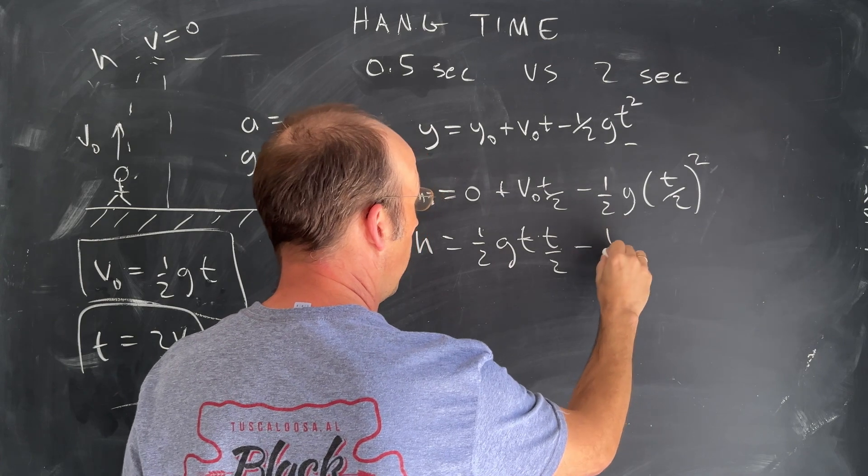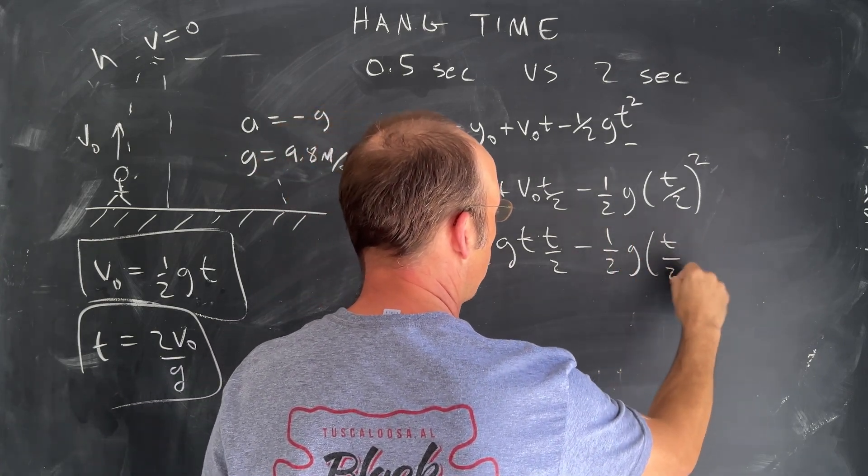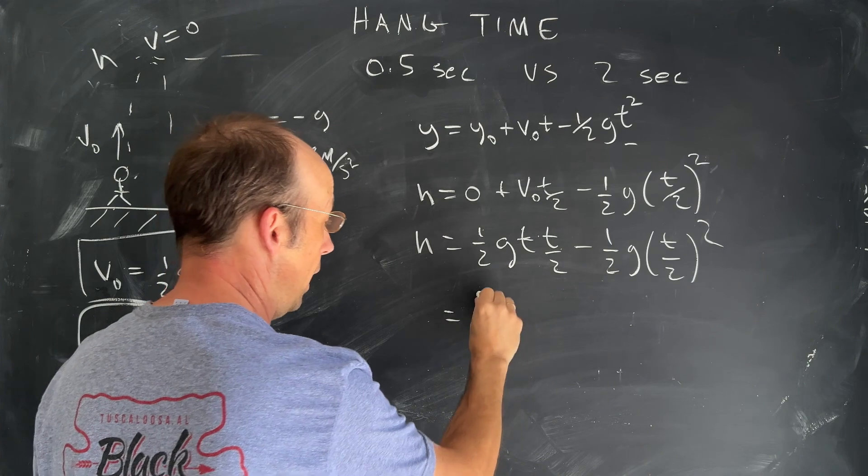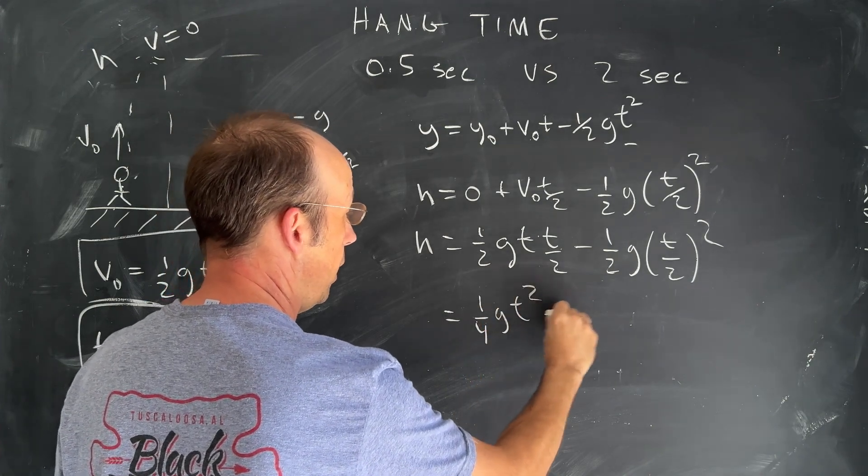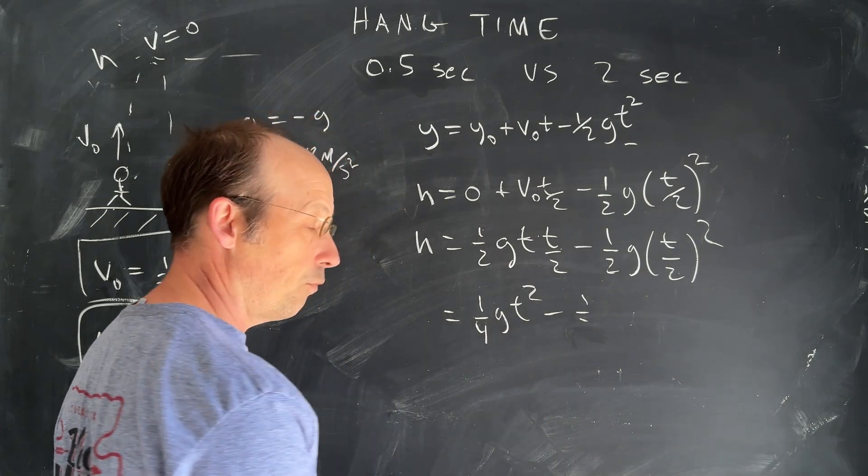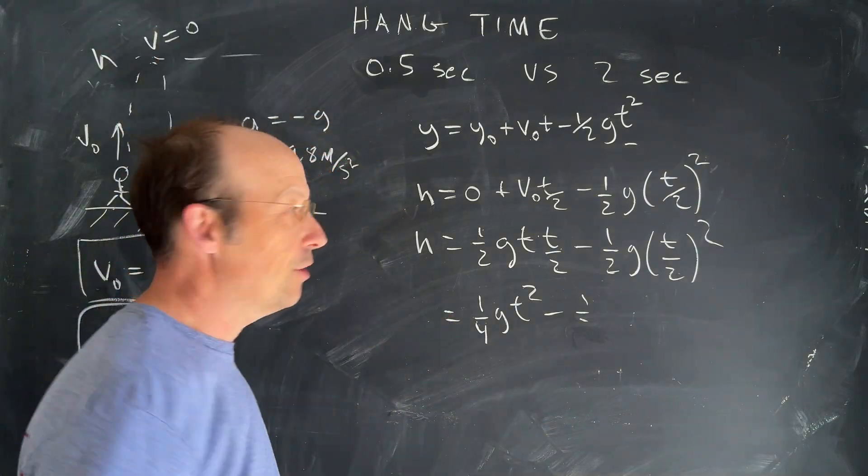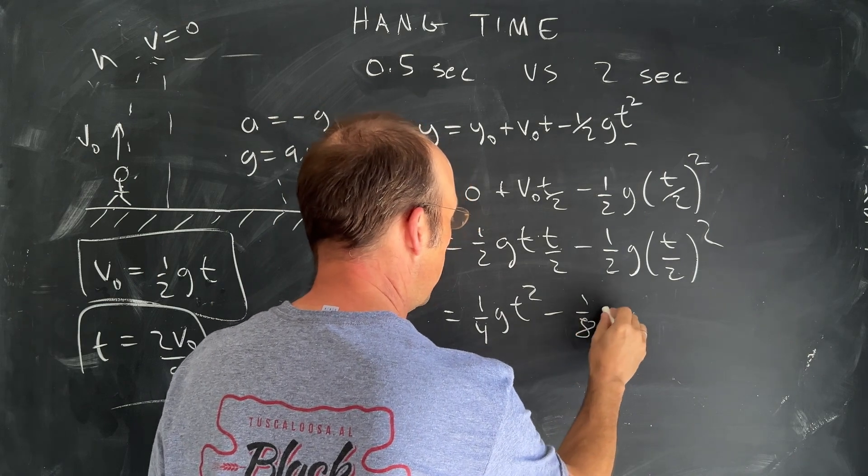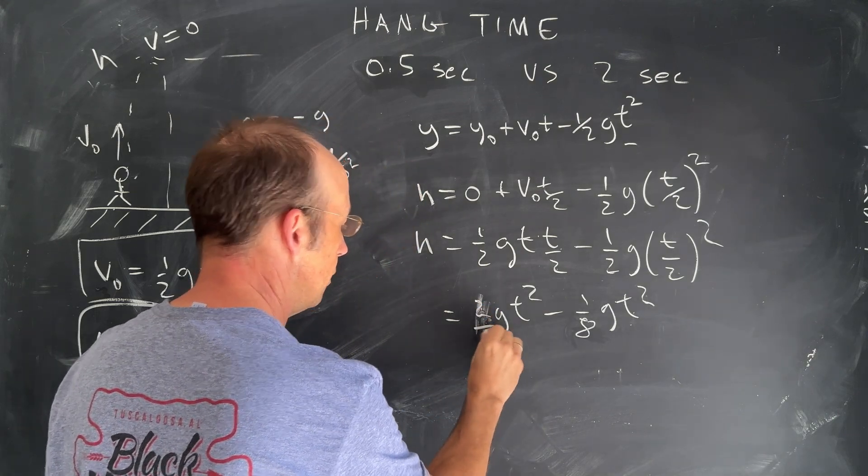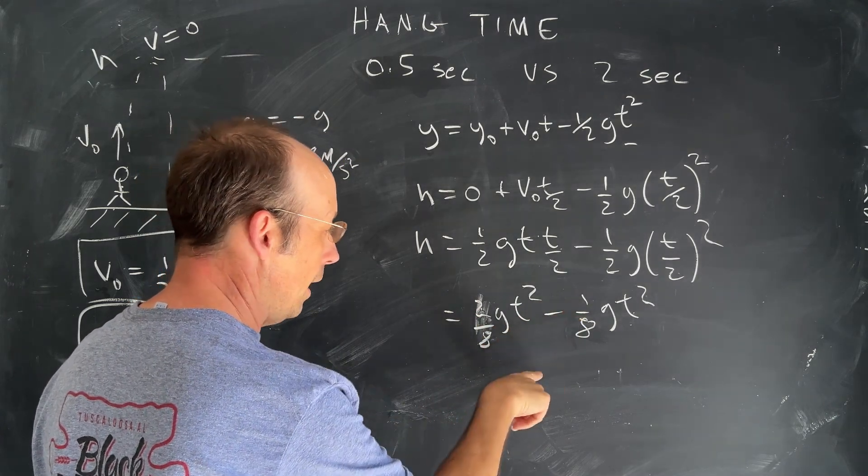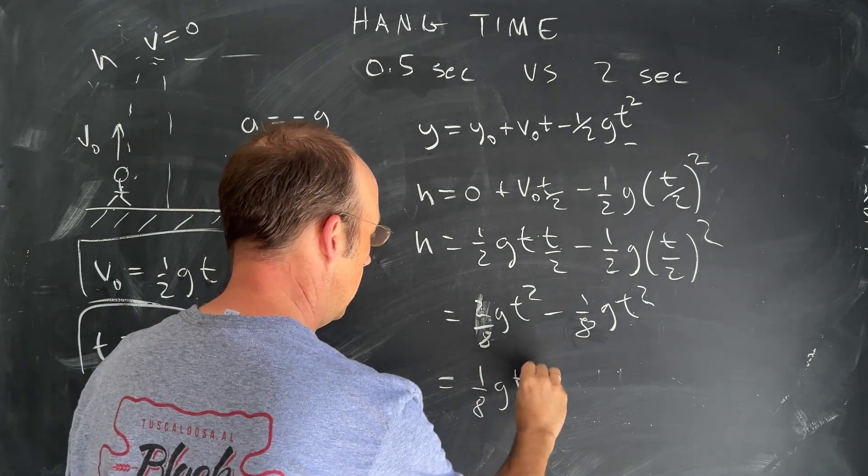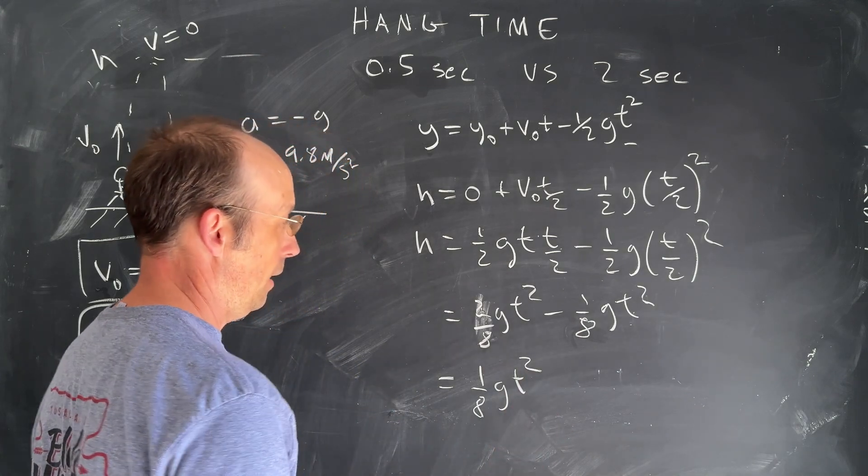And then minus one half g t over two quantity squared. So we get some simplification here. I get a one half and a one half is one fourth g t squared minus one half. Then I square that, and that's going to be two, two squared is four. So I actually get one eighth g t squared. I can add these two together. I'm going to write this as two eighths, right? So two eighths minus one eighths is one eighth. So I get one eighth g t squared. That's my height. And it does have the right units meters per second squared times second squared does give me meters.